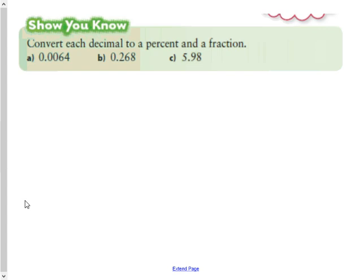Okay, your second show you know from section 4.2, this time instead of giving you a fraction, they start you off with a decimal. And it says convert these decimals to first a percent and a fraction. But we're actually going to do it in reverse order. We're actually going to go to a fraction first and then into a percent.